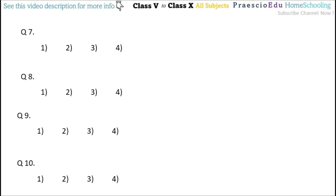Question number seven: which of the following statements is false? Option one — the diameter is twice the radius — is correct. Option two — the diameter is the largest chord — is correct. Option three — the radius is half of the diameter — is also correct. Option four — we can draw one and only one diameter of a circle — is wrong, because we can draw many diameters of one circle. So option number four is the false statement, and option four is the correct answer.